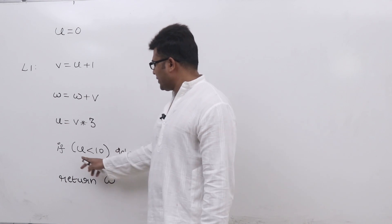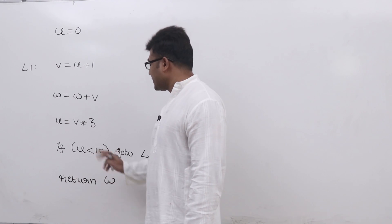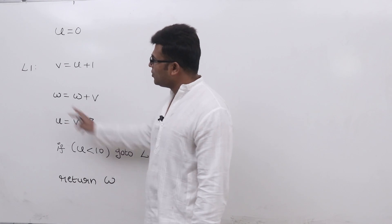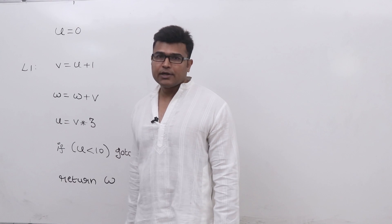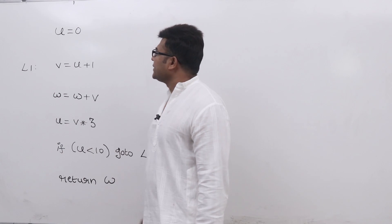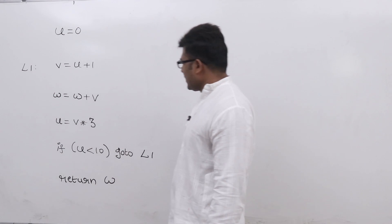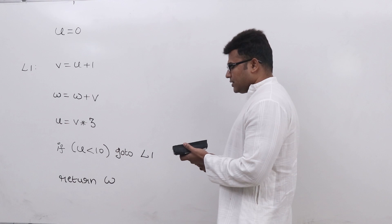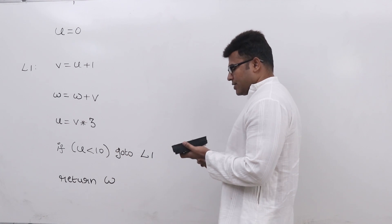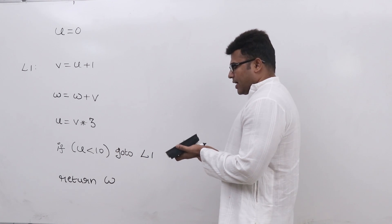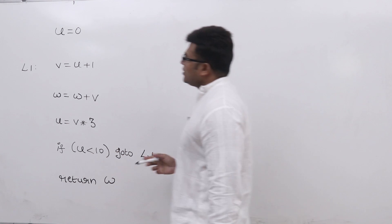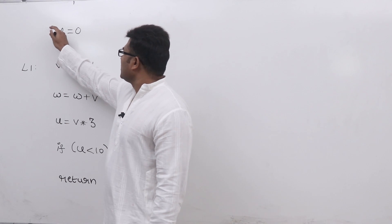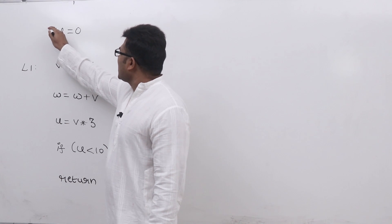So, if u value is less than 10, it is asking us to go to label number 1. So l1 is there. Let's see at each statement what are all the variables that are alive.